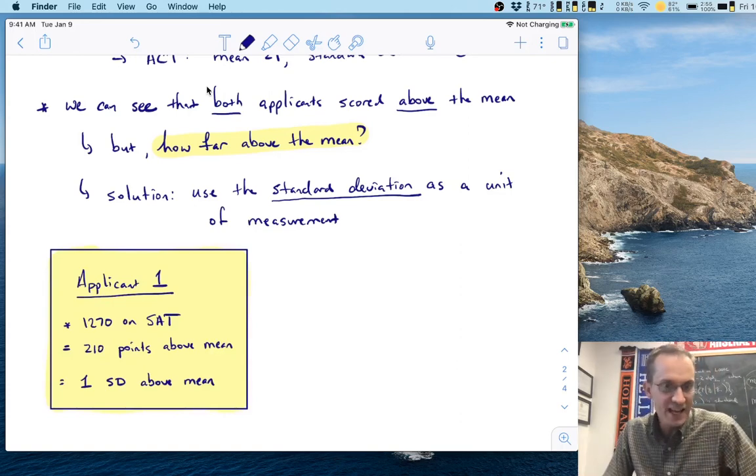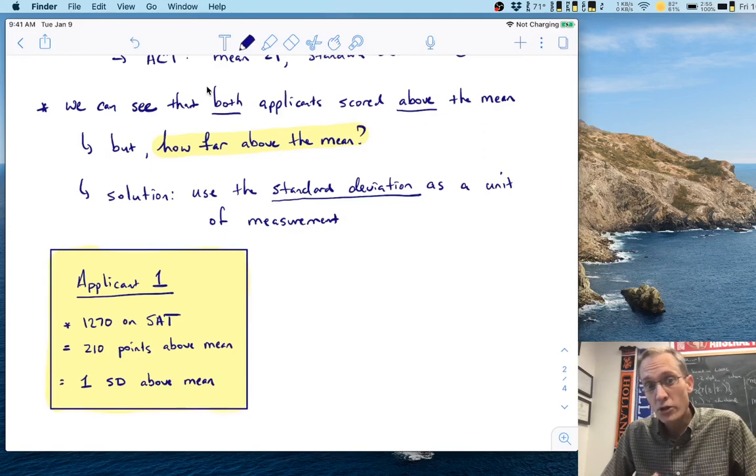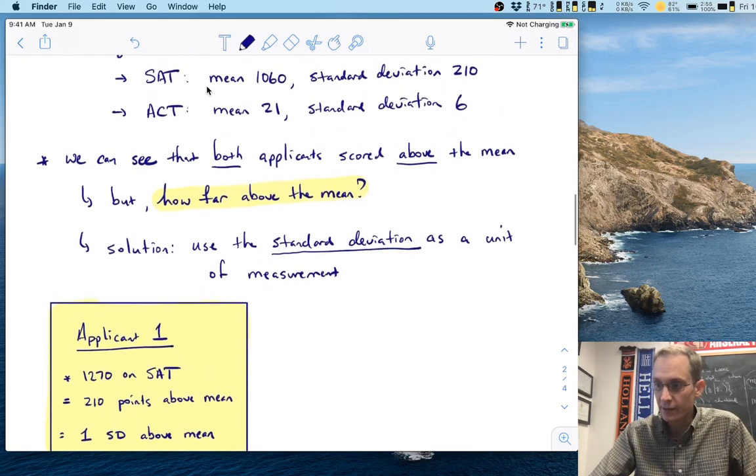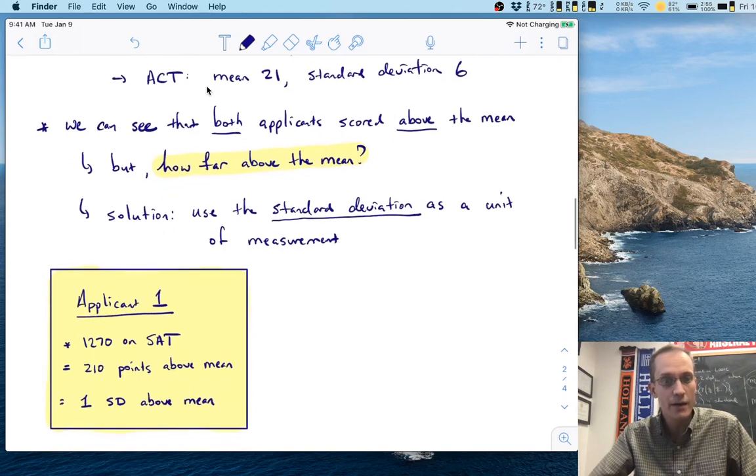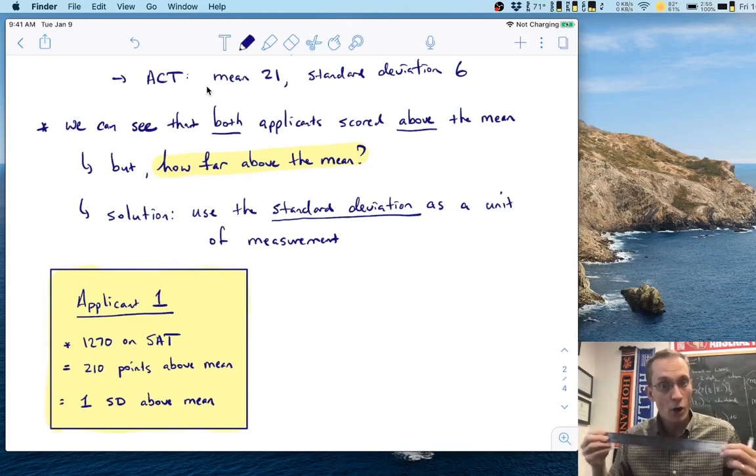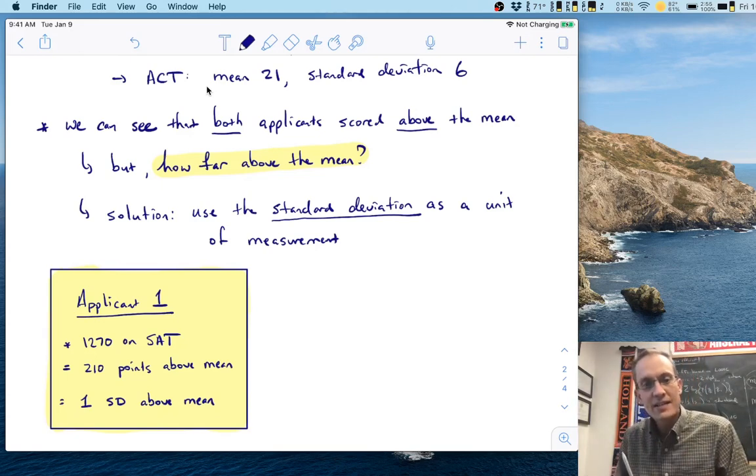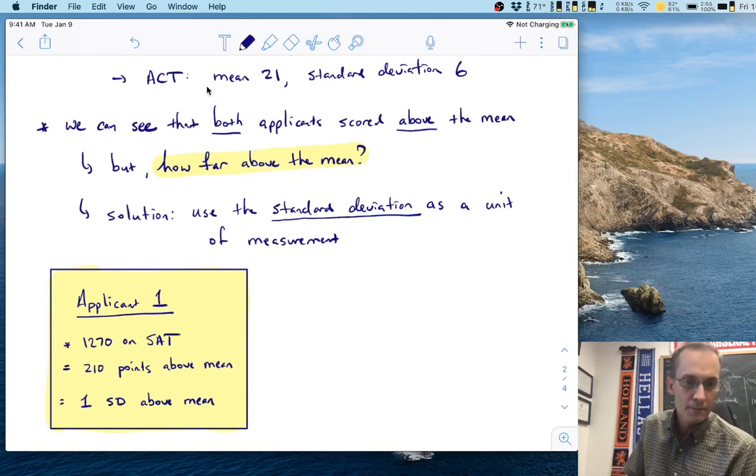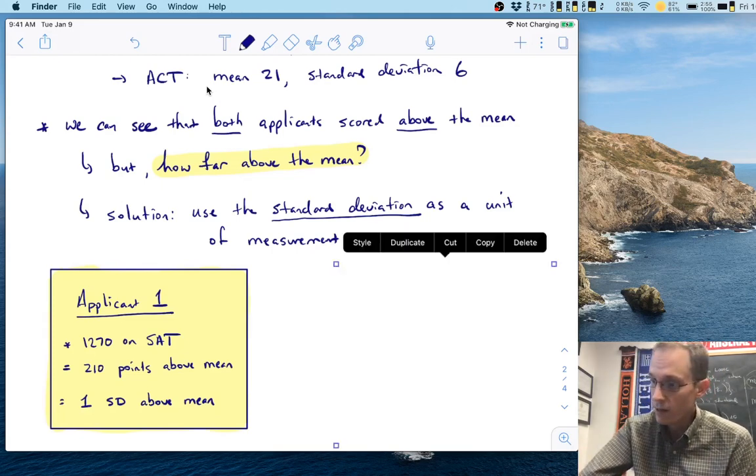So what does that mean? Well, you'll see in a second, what we mean is we're going to talk about where a person's score is compared to the mean, but in terms of the number of standard deviations that this person is away from the mean. Let's see exactly what we mean by this. Consider applicant one, they scored a 1270 on the SAT. Now the mean is 1060. So that means applicant one scored 210 points above the mean. And what we just showed a second ago was that the standard deviation for the SAT is 210. So this applicant scored exactly one standard deviation above the mean.